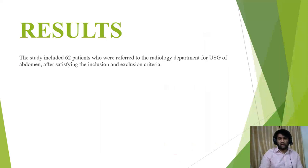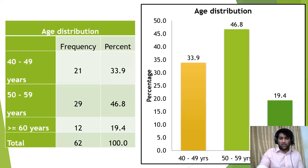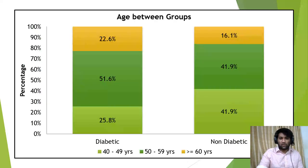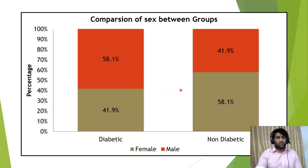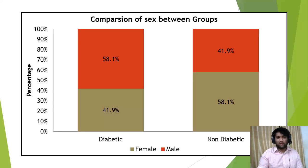Moving to results: 62 patients were included — 31 controls and 31 cases. Looking at the age distribution, we tried to match the groups as much as possible; most patients were in the 52-year age group. For sex distribution, we also tried to match the groups as much as possible. These values were compared using a chi-square test and showed no statistically significant association.